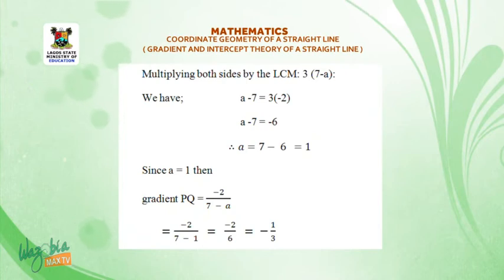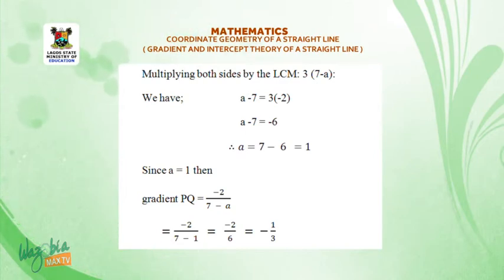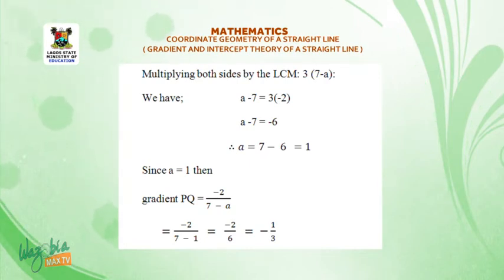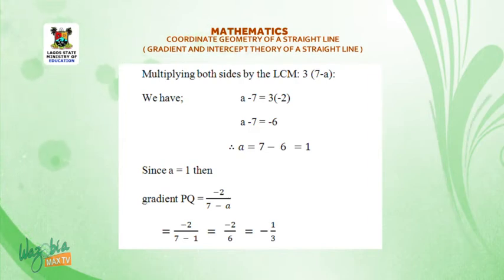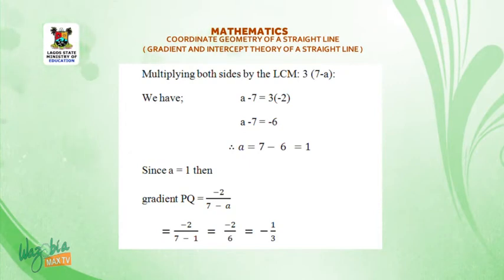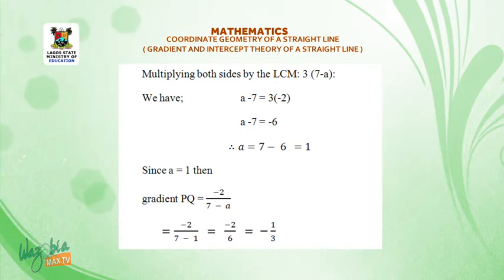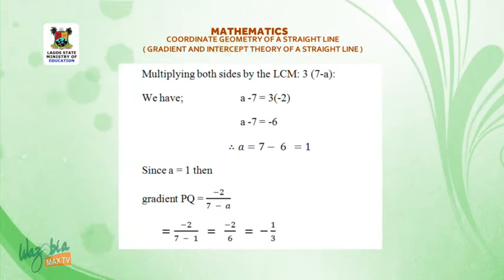Multiplying both sides by the LCM, 3(7 - A), we have: A - 7 = 3 × (-2), so A - 7 = -6. Therefore A = 7 - 6 = 1. Since A = 1, gradient of PQ = -2 / (7 - 1) = -2 / 6 = -1/3.